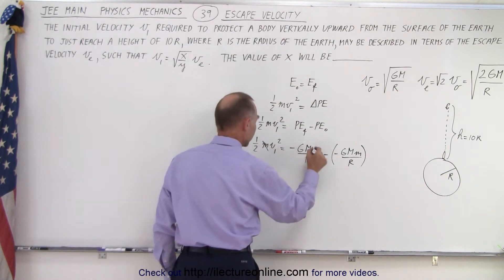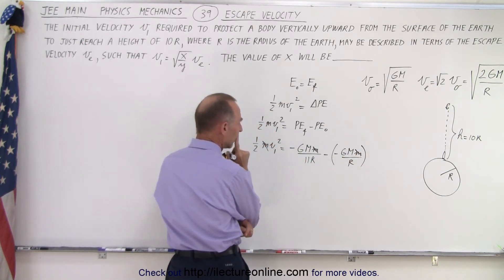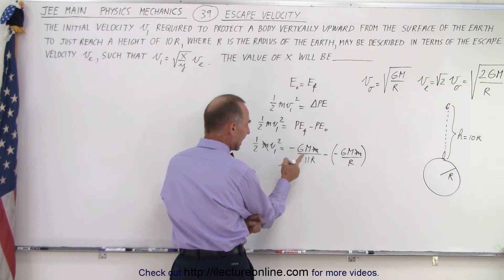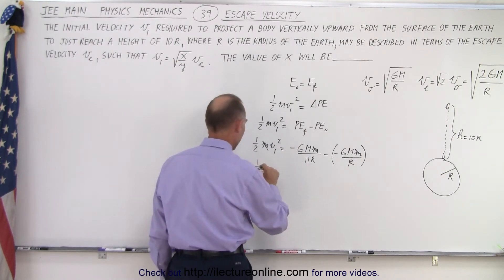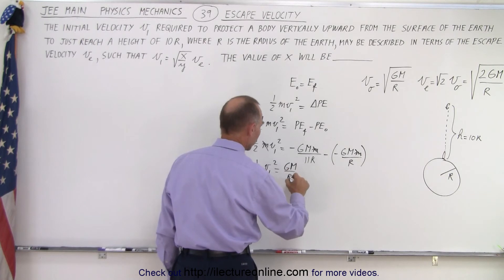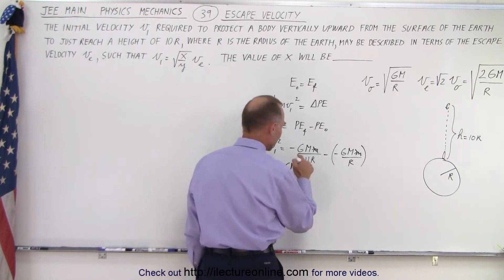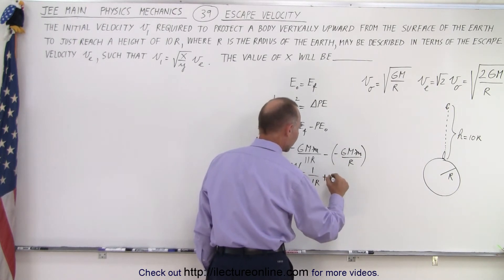Right away notice we can get rid of the mass of the rocket, and then we can factor out a GM over r. So we have one-half v1 squared equals GM over r, and what we have left here is a minus 1 over 11r and a minus times a minus which is a plus.